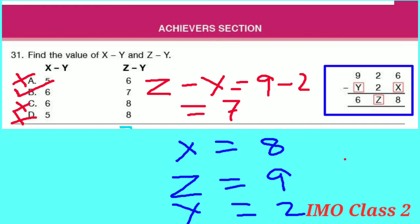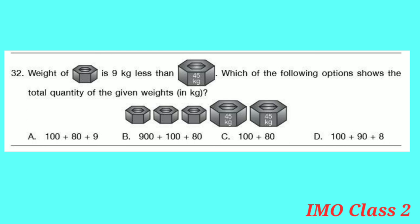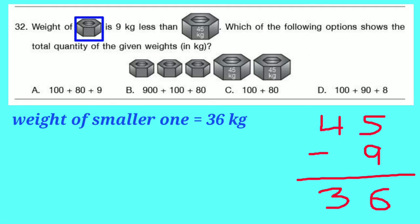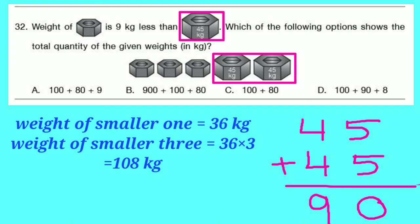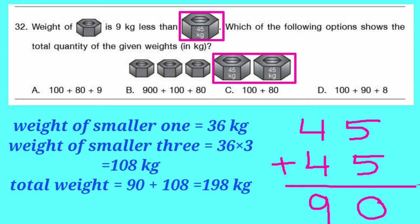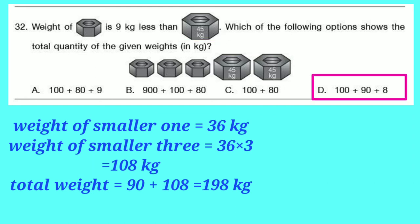Question number 32: The weight is 9 kg less than 45 kg. Which option shows the total quantity of the given weights in kg? 45 − 9 = 36 kg. There are 3 such weights: 36 × 3 = 108 kg. There are also two 45 kg weights: 45 + 45 = 90 kg. Total weight: 90 + 108 = 198 kg. Option D shows 100 + 90 + 8 = 198 kg. Option D is correct.